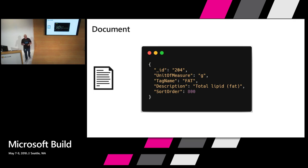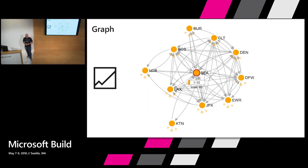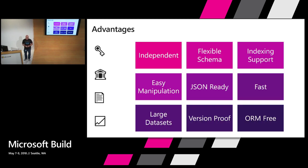The third type is document. It's literally taking an object and storing it in the database — it can be a complex object with arrays and nested objects within it. And then finally there's the concept of a graph database, which is concerned with relationships. Here I've got vertices or nodes in the graph that are airports — they have longitude, latitude, and name — and then I have edges, which are connections between airports that can also have information associated with them.